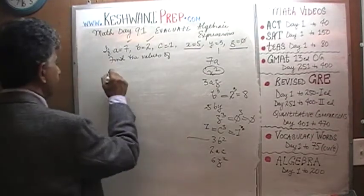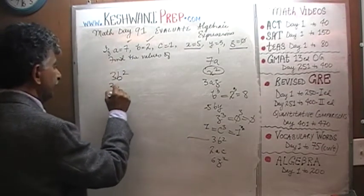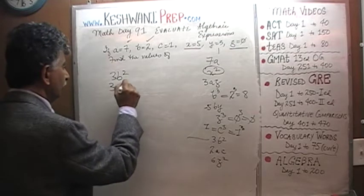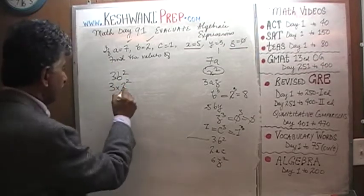3B squared, 3B squared, 3 times B, B is 2, so it's 2 squared. 2 squared is 4, 4 times 3 is 12.